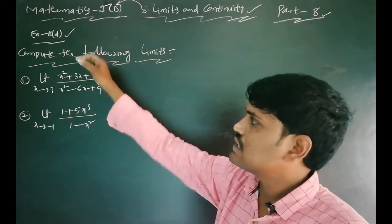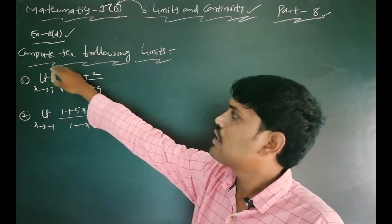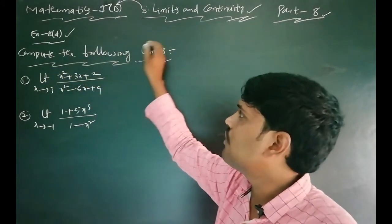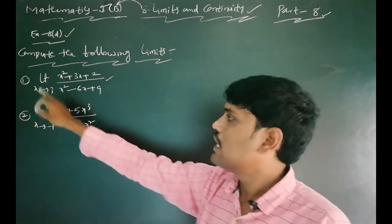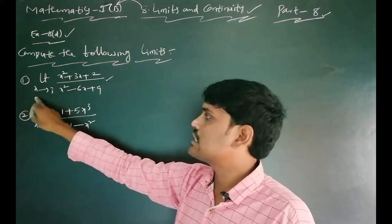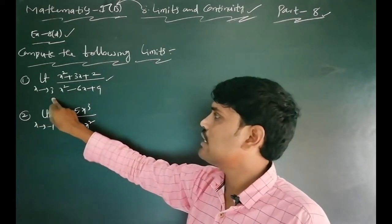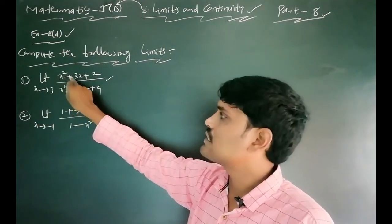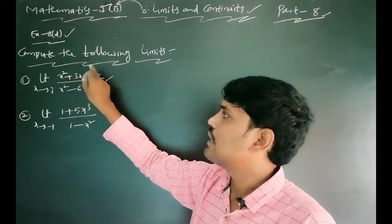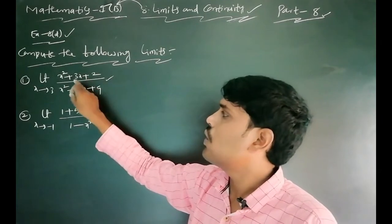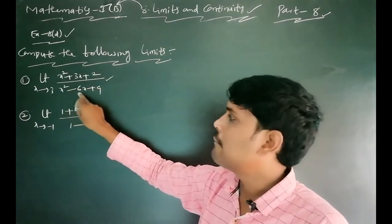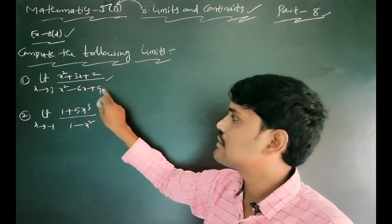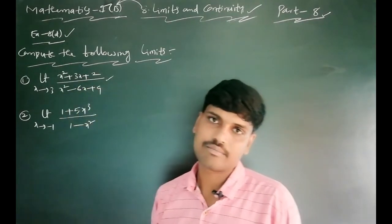First, read the problem. Compute the following limits. The first problem is: limit as x tends to 3 of (x squared plus 3x plus 2) all divided by (x squared minus 6x plus 9).